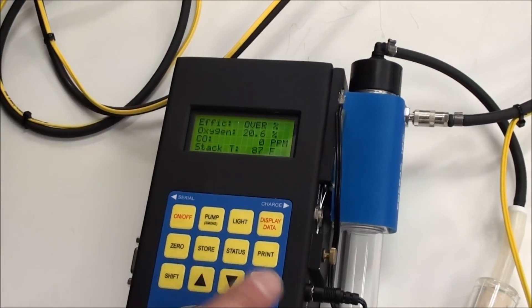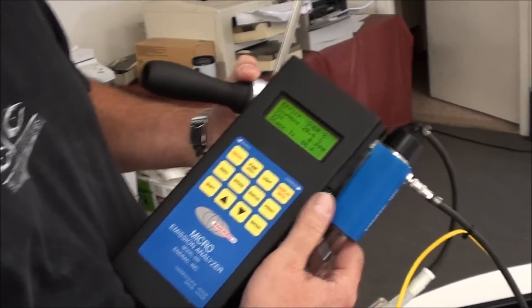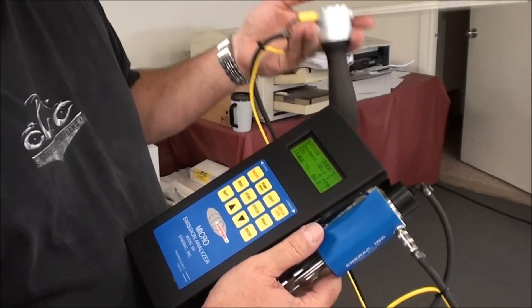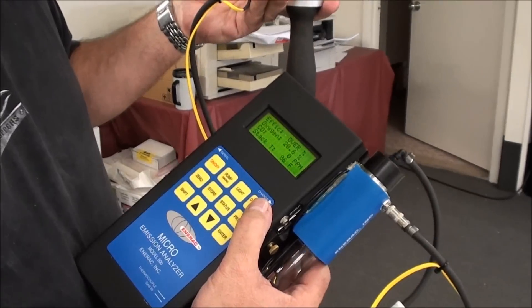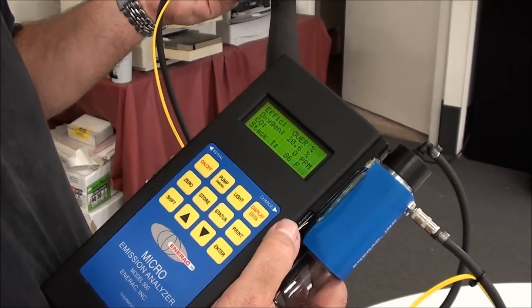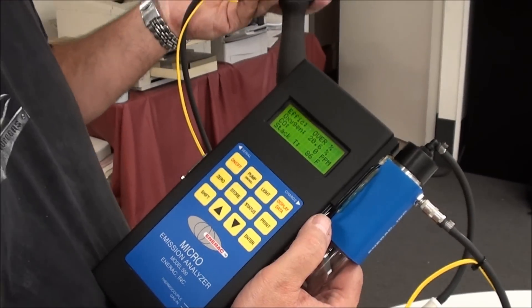At this point, you're pretty much ready to go. What you'll do is take the unit out to your source, insert the probe in the stack, watch the readings, wait until they stabilize. Once you're satisfied that you've got good readings, or you've got the readings where you expect them to be, or you've made any changes to the equipment, and you watch the display, and everything is where you want it to be, you have several options at this point.